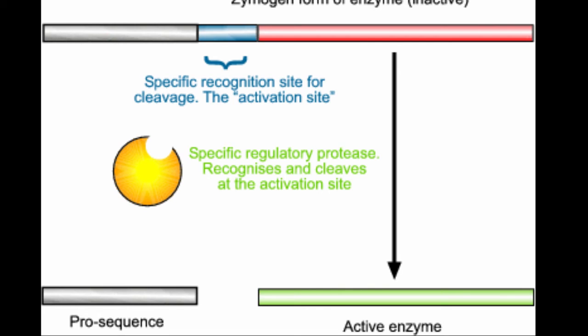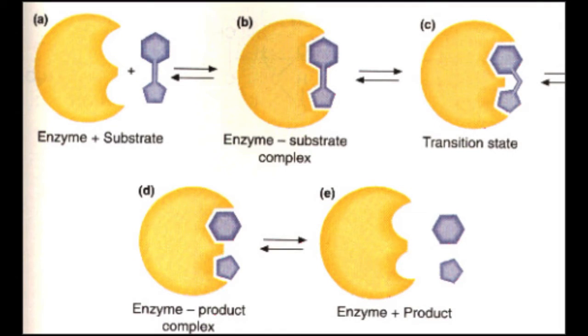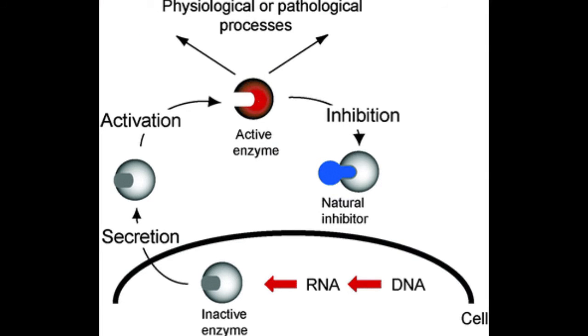Accidental activation of zymogens can happen when the secretion duct in the pancreas is blocked by a gallstone, resulting in acute pancreatitis. Fungi also secrete digestive enzymes into the environment as zymogens. The external environment has a different pH than inside the fungal cell, and this changes the zymogen structure into an active enzyme.